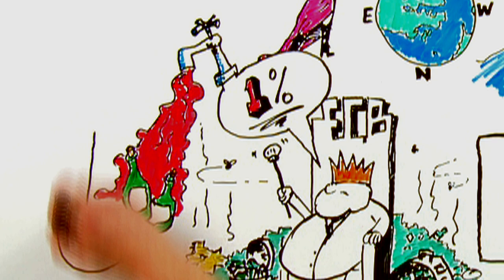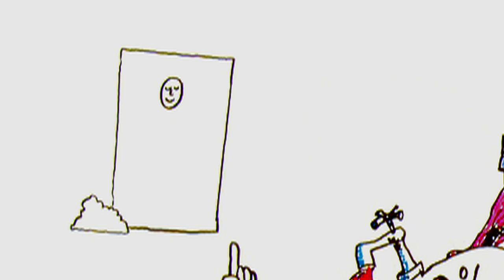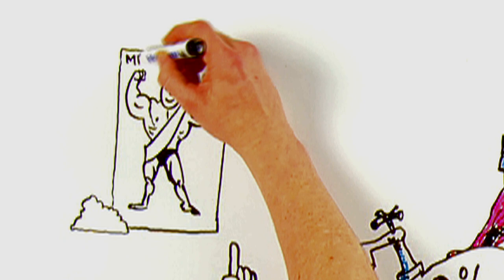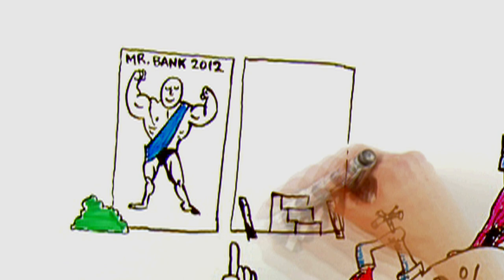Banks take this money that they have borrowed at 1%, and they lend it back to insolvent governments at 6%. Now this looks great, because the interest rates on government bonds fall, and the assets on the bank's balance sheet seem to get bigger. So both governments and banks look stronger.